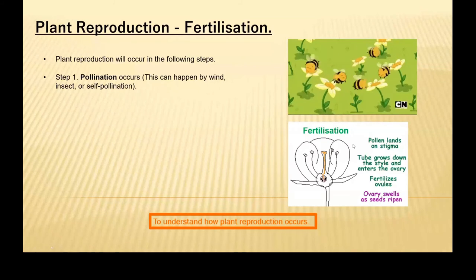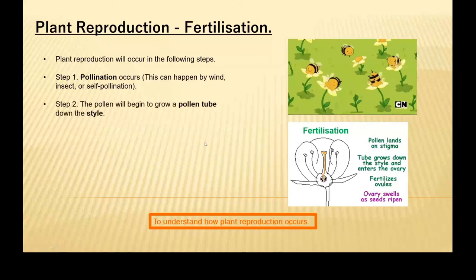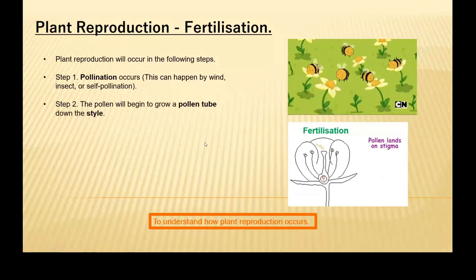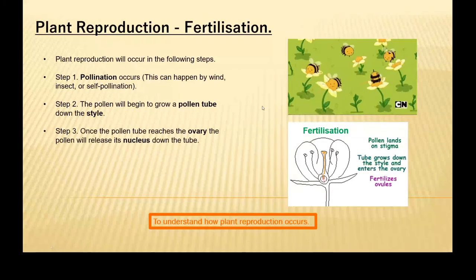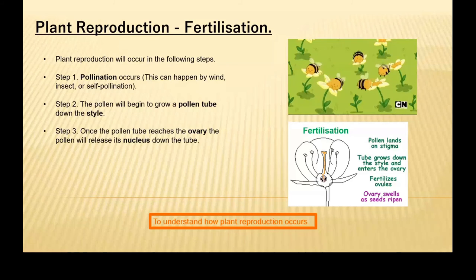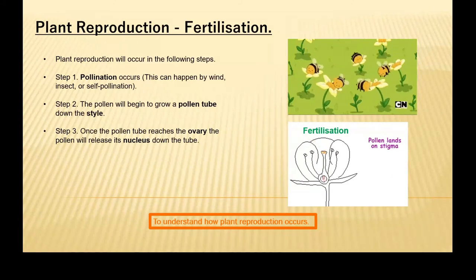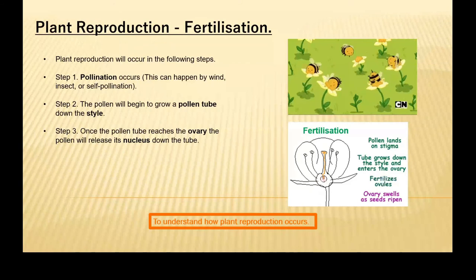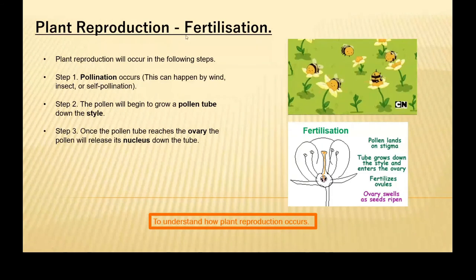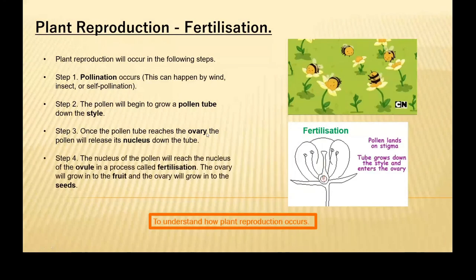You can probably see here there's a nice little animation for you to try and visualize what we're going through. Step two: the pollen will begin to grow a pollen tube down the style. Step three: once the pollen tube reaches the ovary, the pollen will release its nucleus down the tube. For any form of fertilization, there needs to be fusion of the nuclei, even in plants.